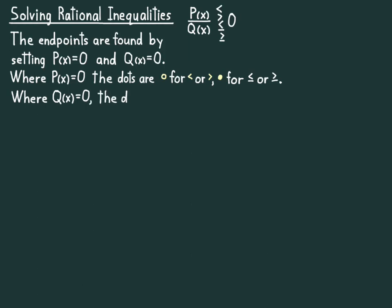Where Q(x) is zero, the dots are always open dots because we can't divide by zero. So when Q(x) is zero, that value of x cannot be in the solution set because it forces you to divide by zero, which we can't do.